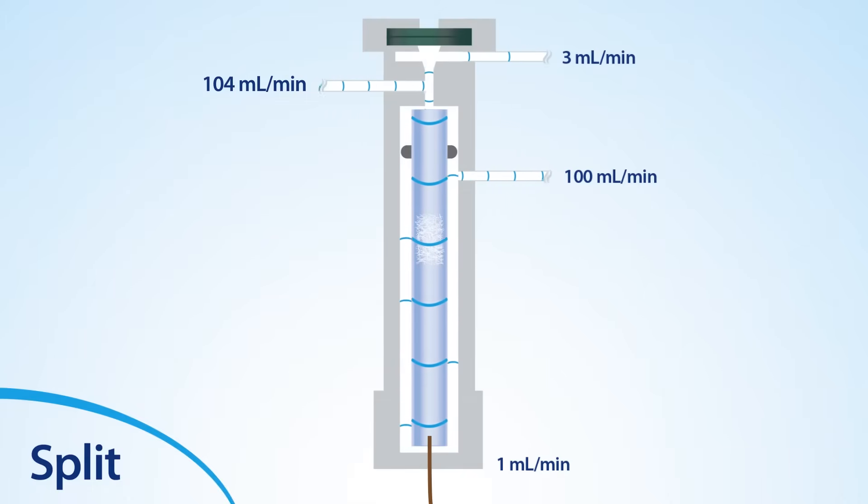This ratio, the split ratio, is determined by the user before starting the analysis. Split ratios typically vary between 5:1 to 500:1, with the higher the ratio, the lower the amount of sample that enters the column compared to what passes out the split vent.